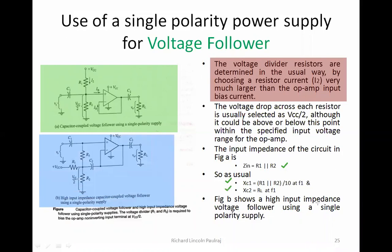Figure B shows a high input impedance voltage follower using a single polarity supply. We have made some changes: plus VCC is given here, and an additional capacitor is placed. In Figure A there is no capacitor at this point, but here there is an additional capacitor and an additional resistor R3 is added. RL remains as it is, and instead of C2, it is C3 here. Plus VCC, minus VCC, and C1 are as usual, giving an extra resistor and extra capacitor.